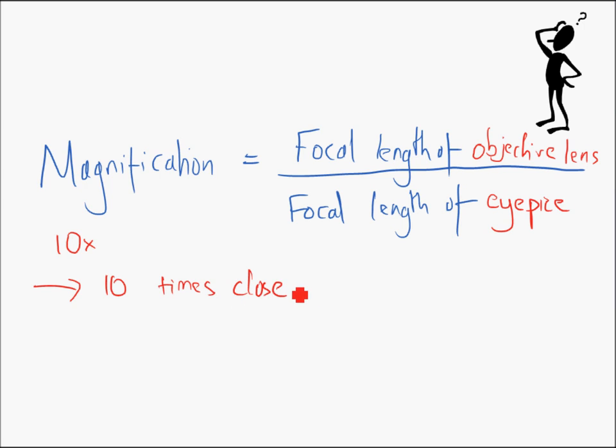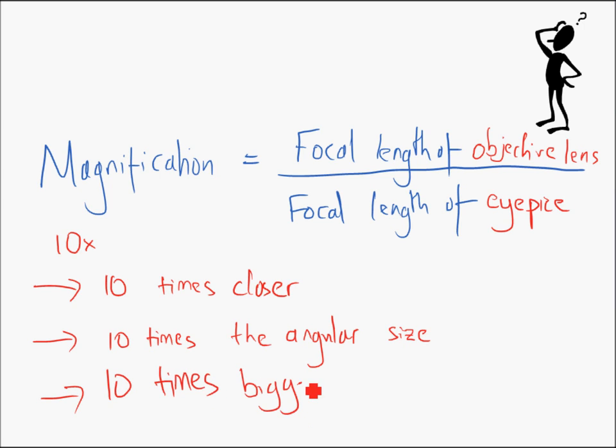10 times closer. An object looks like it's 10 times closer. Or, it has 10 times the angular size. We've spoken about angular size already. Or, most straightforwardly, it looks 10 times bigger than it actually is. And that's what magnification, actually strictly talking, strictly speaking means.